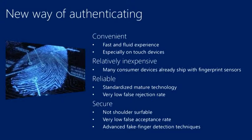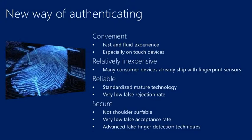Fingerprint scans cannot be shoulder-surfed. Even if somebody is looking over your shoulder as you put your finger on the fingerprint sensor, they cannot use that information to authenticate as you, because they need your actual finger on the sensor. Fingerprint readers also have a very low false acceptance rate — when a different person tries to authenticate by putting their finger on the sensor, the system will reject that fingerprint. Most modern fingerprint sensors have highly advanced techniques to detect fake fingers and identify them from real ones.